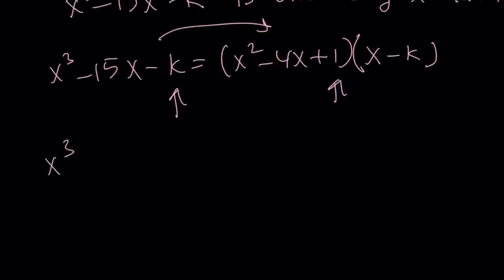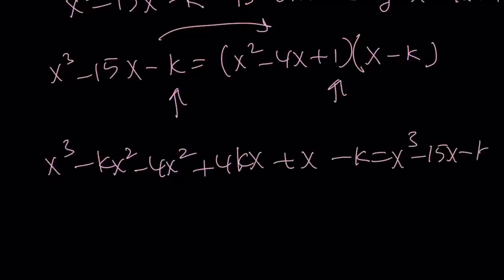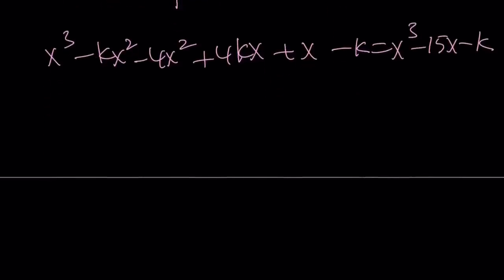Let's go ahead and distribute. This is what I mean by the polynomial perspective, so we're kind of doing it the polynomial way. x cubed minus kx squared minus 4x squared plus 4kx plus x minus k. So I distribute everything and then set this equal to my cubic on the left-hand side because they're equal for all values of x. And here, let's put it together combining like terms, so on and so forth.